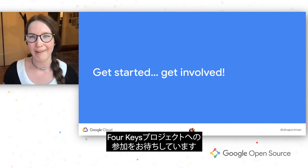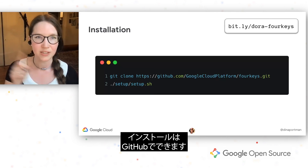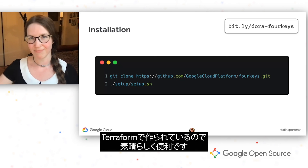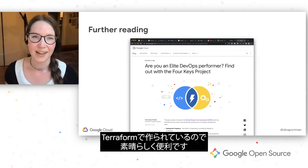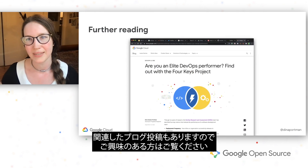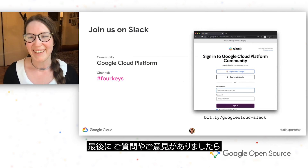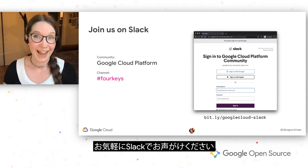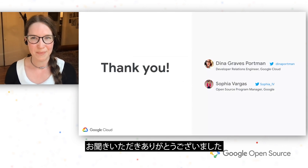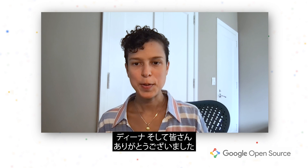With that, I welcome you to get started and get involved. You can try out the Four Keys project — you install it, it's on GitHub, you just run the setup script with Terraform, so it just does a lot of magical things. We also have a blog post if you want to read more about it. And finally, if you want to ask questions or just want to chat, join us on Slack. Thank you very much, and thank you, Sophia. Thank you, Dina, and thank you to our listeners.